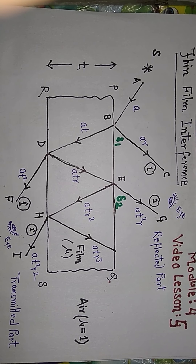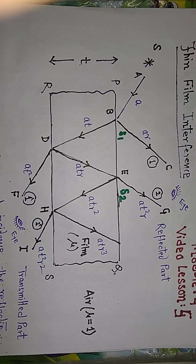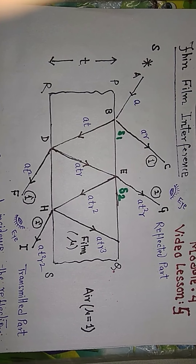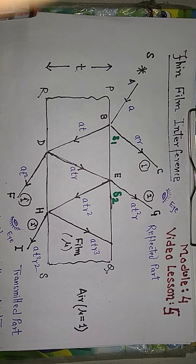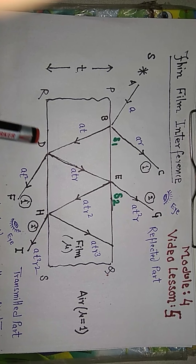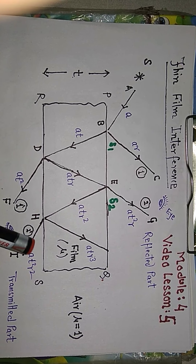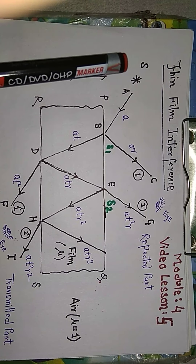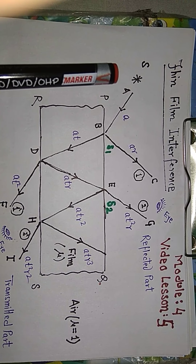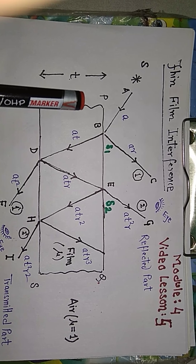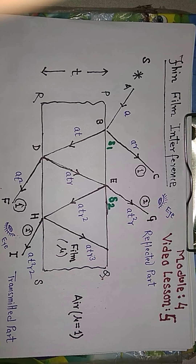Hello everyone. This is video lesson 5, and in this video lesson we will try to understand the mechanism of thin film interference. Let's see the figure PQRS — this is the thin parallel film. PQ is the top layer, RS is the bottom layer. Capital S is the monochromatic light source, and a light ray falls on the top surface of the film at point B.